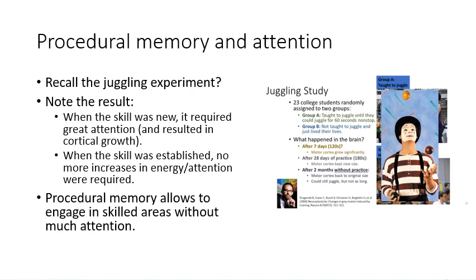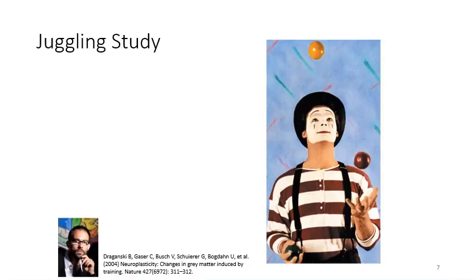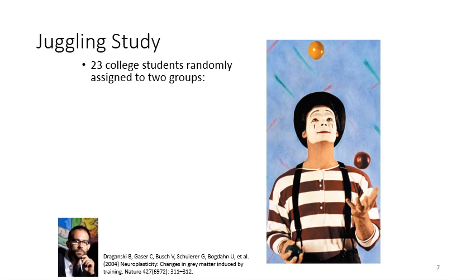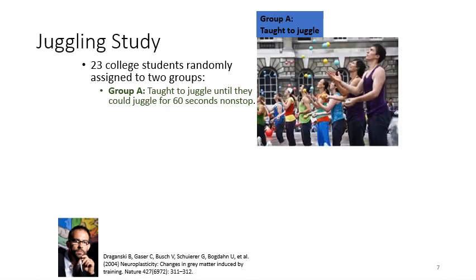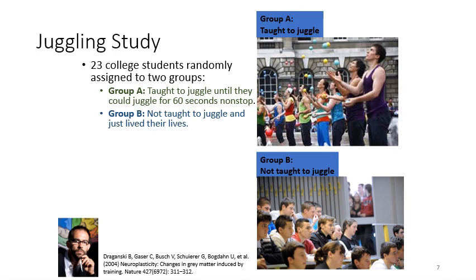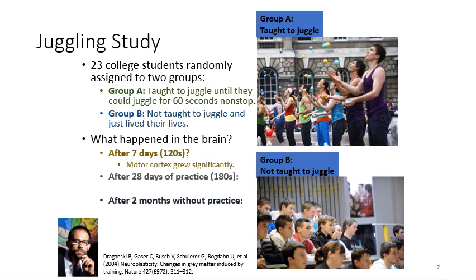Once a procedural memory for how to do something is strong, it requires much less attention. There was a study on neuroplasticity — about how we form new pathways — with 23 college students randomly assigned to two groups. Group A was taught to juggle until they could juggle for 60 seconds nonstop, and Group B was not taught to juggle. After a week, the motor cortex in the jugglers grew significantly — their brain actually changed. After 28 days of practice, their motor cortex retained those new pathways.